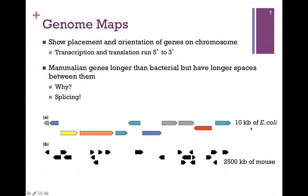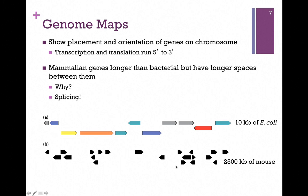In Part A, this is a 10 kilobase section of the E. coli genome, and you can see there's very little wasted space — most is transcribed and translated into protein. In contrast, we have a larger segment, about 2,500 KB of a mouse genome, but even in this comparison, you can see the gene segments are short, and there are large regions that don't code for any protein.